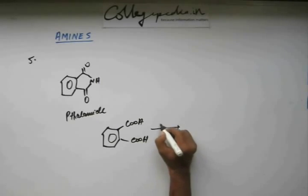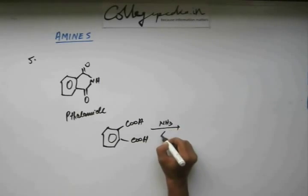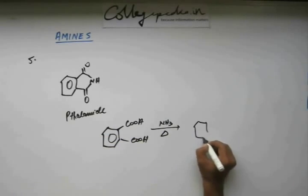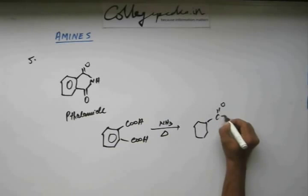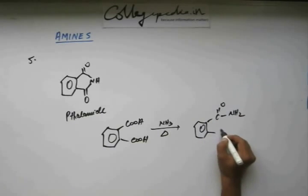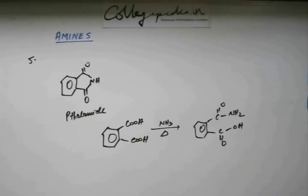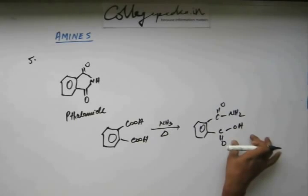What you do is you add ammonia and you heat it. So amide will be formed on one of the carboxylic acids like this, and because you are heating it, the water molecule will again come out if you form amide with the other acid as well.